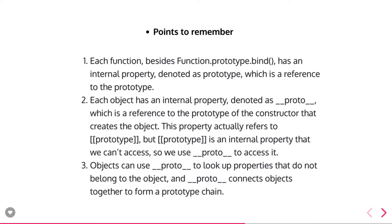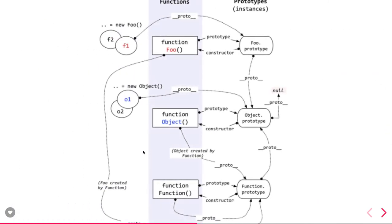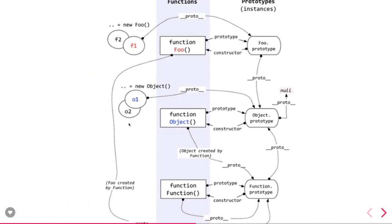Each object has an internal property denoted as __proto__, which is a reference to the prototype of the constructor that created that object. If you understand this line you understand what __proto__ is. __proto__ is a reference to the prototype of the constructor that created the object. So if you create 'new Object()' or 'new Foo()', the __proto__ of that object is pointing to the prototype of the function that created it.